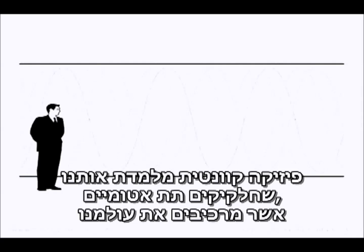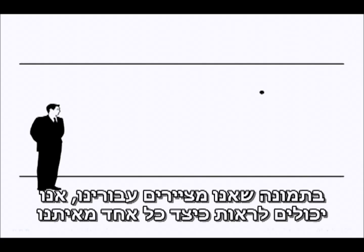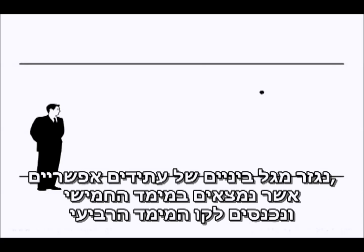Quantum physics tells us that the subatomic particles that make up our world are collapsed from waves of probability simply by the act of observation. In the picture we are drawing for ourselves here, we can now start to see how each of us are collapsing the indeterminate wave of probable futures contained in the fifth dimension into the fourth dimensional line that we are experiencing as time.